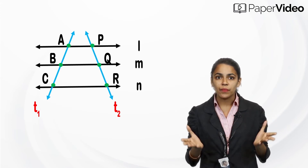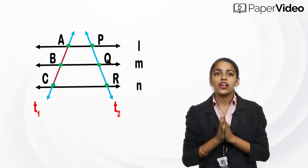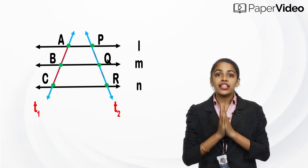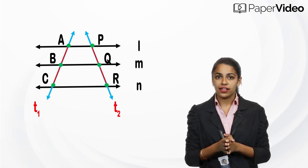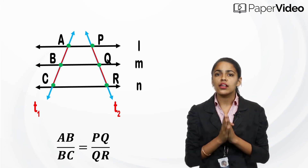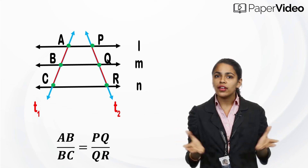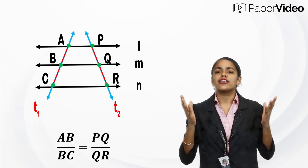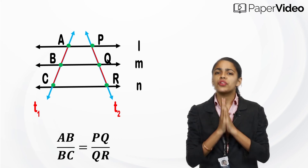The property of three parallel lines and their transversals states that the ratio of these two intercepts — AB upon BC — is equal to PQ upon QR. In other words, the ratio of the intercepts made on one transversal by three parallel lines